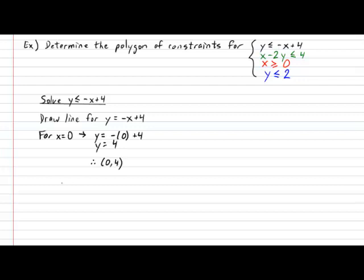Let's get a second point. Completely randomly, I will plug in zero into the y. So y equals zero. Zero equals negative x plus four, and that means x is equal to four. That gives me a second point located at (4, 0).